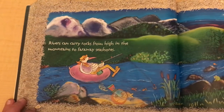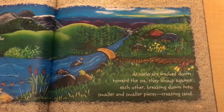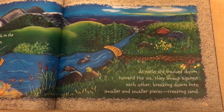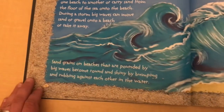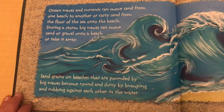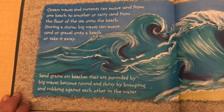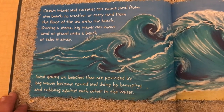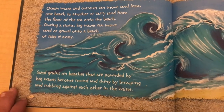Rivers can carry rocks from high in the mountains to far away seashores. As rocks are washed down toward the sea, they bump against each other, breaking down into smaller and smaller pieces, creating sand. Ocean waves and currents can move sand from one beach to another or carry sand from the floor of the sea onto the beach. During a storm, big waves can move sand or gravel onto a beach or take it away. Sand grains on beaches that are pounded by big waves become round and shiny by bumping and rubbing against each other in the water.